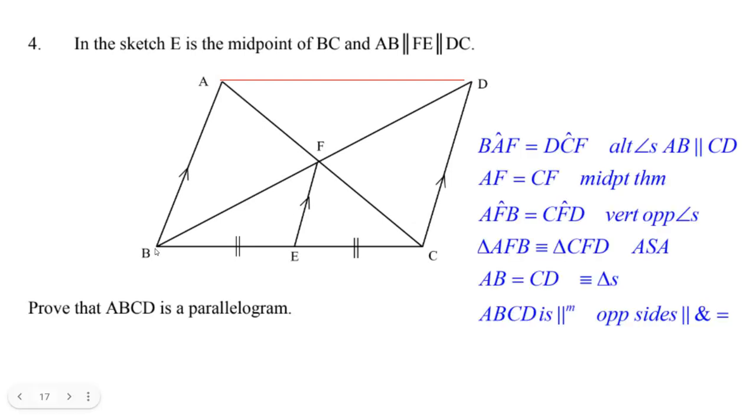Well, let's see here. Does it make sense that BAF and DCF, those angles right there are in the corners of a Z of these parallel lines, because AB is parallel. Hey, they must be equal. So those two angles there are equal. And AF has to equal FC. It's a midpoint theorem.